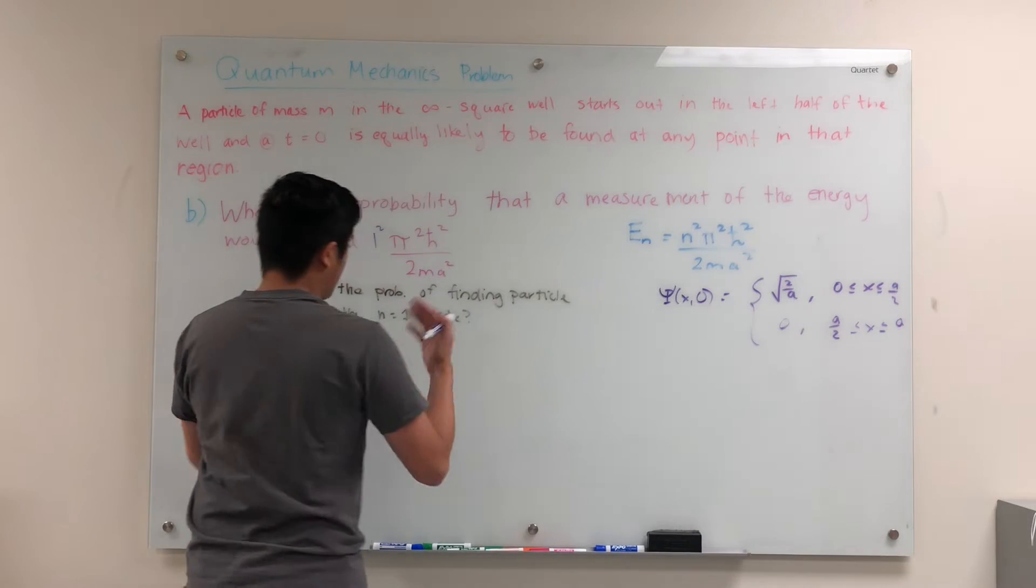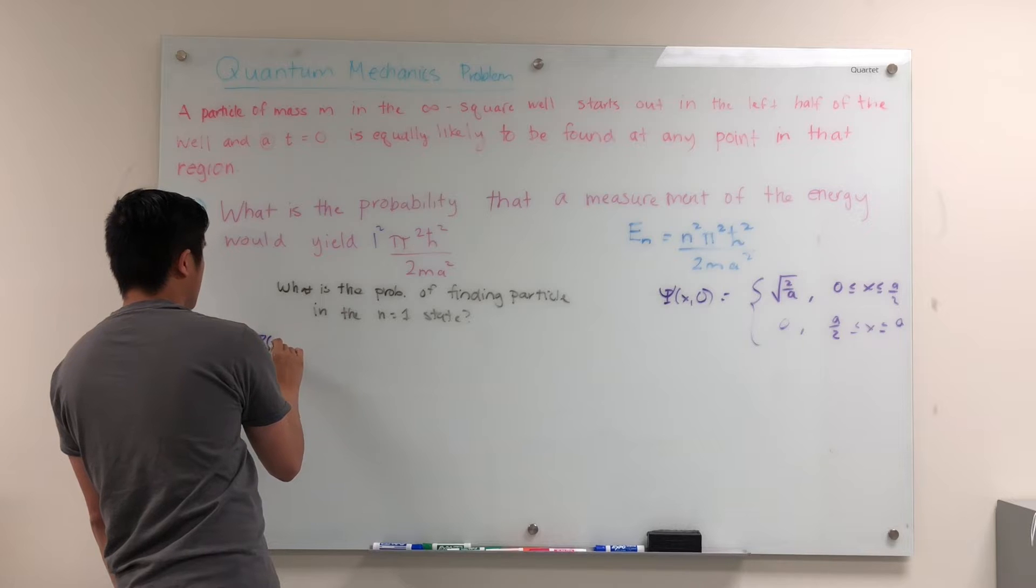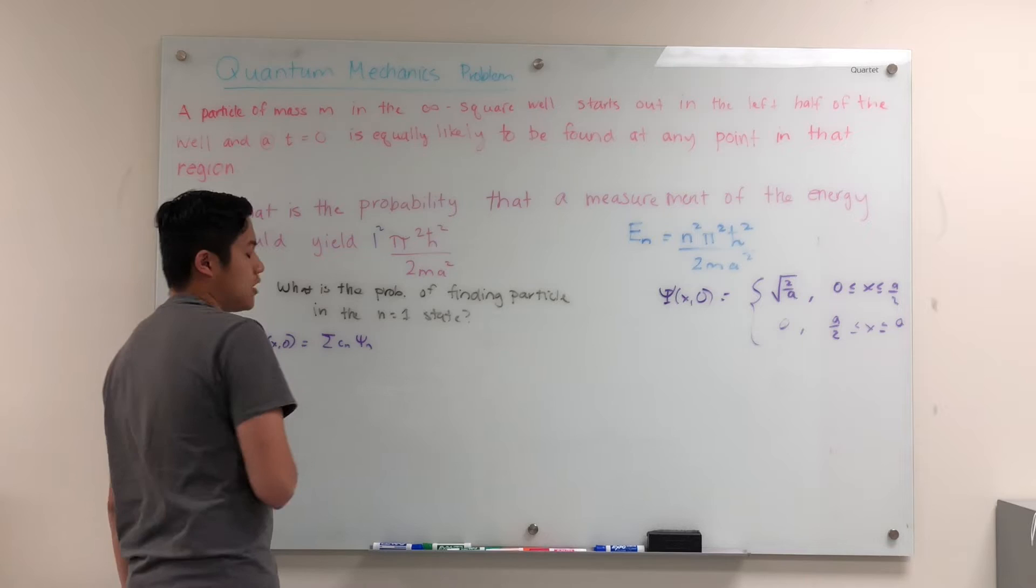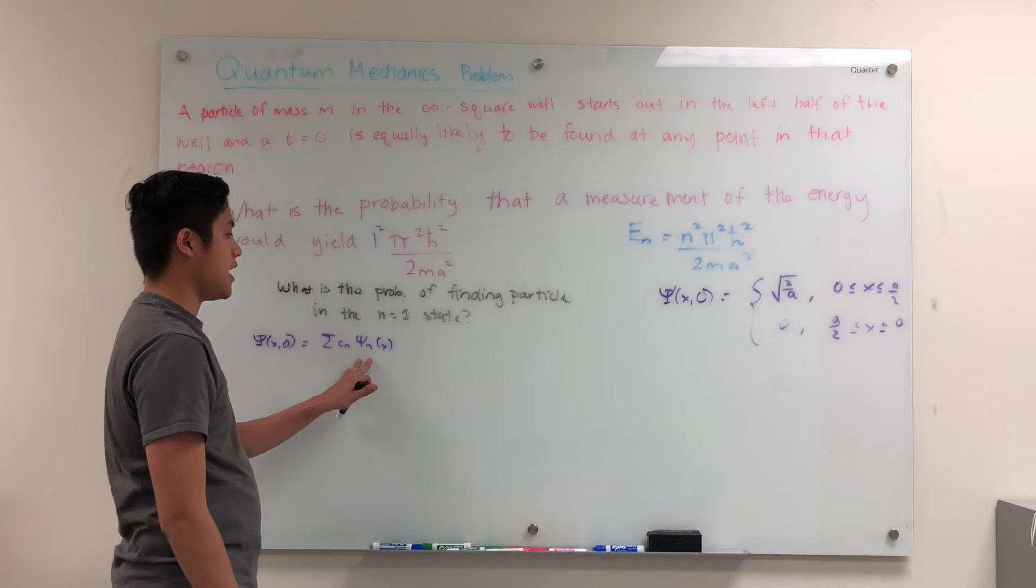So one way to think about this is that think of the initial wave function as a superposition of states, of states in the infinite square well, psi n of x.